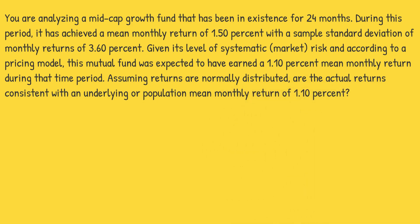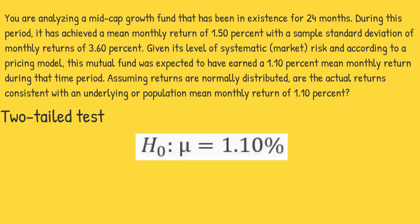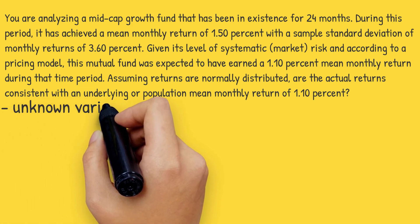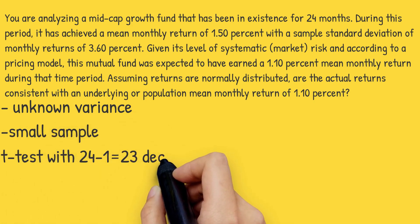The claim we want to test is whether the actual returns of 1.5% are consistent with the theoretical returns of 1.1%. We don't care if actual returns are higher or lower — we only need to know if the two returns are statistically different. Hence, this is a two-tailed test with a not-equal-to alternative hypothesis. The null hypothesis is μ = 1.1% versus the alternative μ ≠ 1.1%. Since the population variance is not known and the sample is small (n=24), we use a t-test with 24 minus 1, or 23 degrees of freedom.